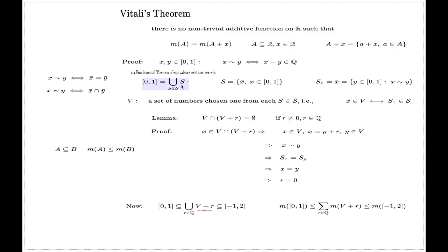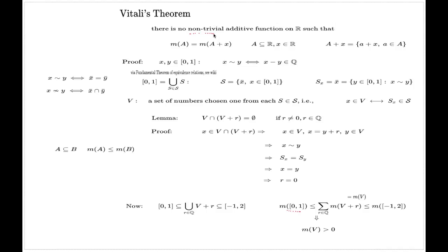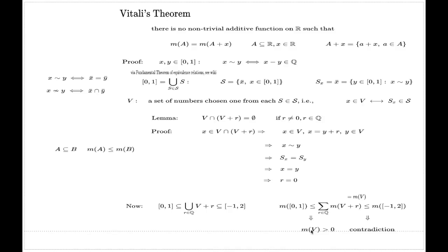The measure of [0,1] is less than or equal to the measure of the countable disjoint union of translates of V — by the lemma these are all disjoint. So the measure of the disjoint union is the sum of the individual measures. By translation invariance, each individual measure equals M(V). From the left inequality we conclude M(V) is non-trivial, because if M(V) were zero the whole sum would be zero, contradicting the non-trivial measure. But if each term M(V) is a fixed positive number and you sum infinitely many, the sum is infinite — contradicting the finite bound from the right. That's the contradiction.